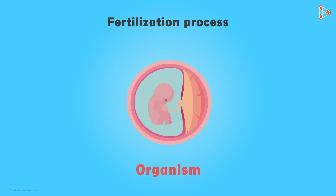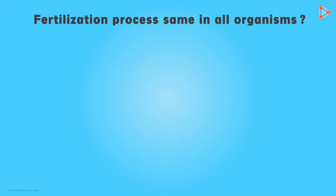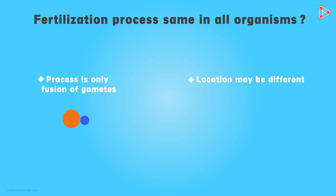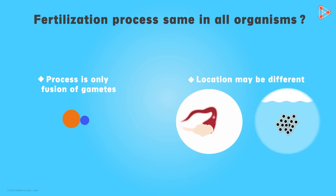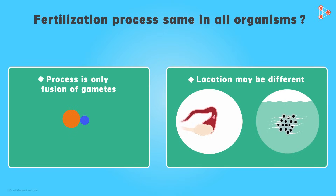So is the process of fertilization the same in all organisms? In order to answer this question, we have to keep in mind two major facts. Firstly, the process of fertilization is simply the fusion of gametes. Secondly, the place where the fusion of gametes can take place may be different in various organisms. The simplest answer is that the process of fertilization will almost be the same, because it involves the fusion of gametes. However, the location where fertilization occurs may be different in animals.